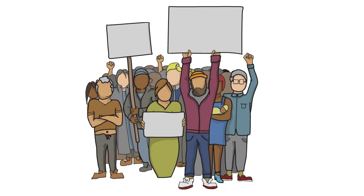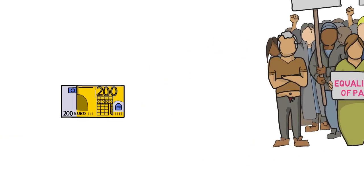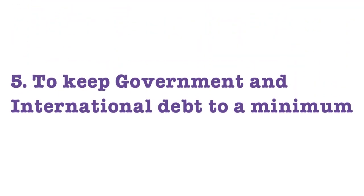Number four is to keep unemployment low. Keeping unemployment at a natural rate and at the lowest level possible is a major priority of most economies, both to reduce political unrest and agitation, but also because employment is so important to people's well-being.